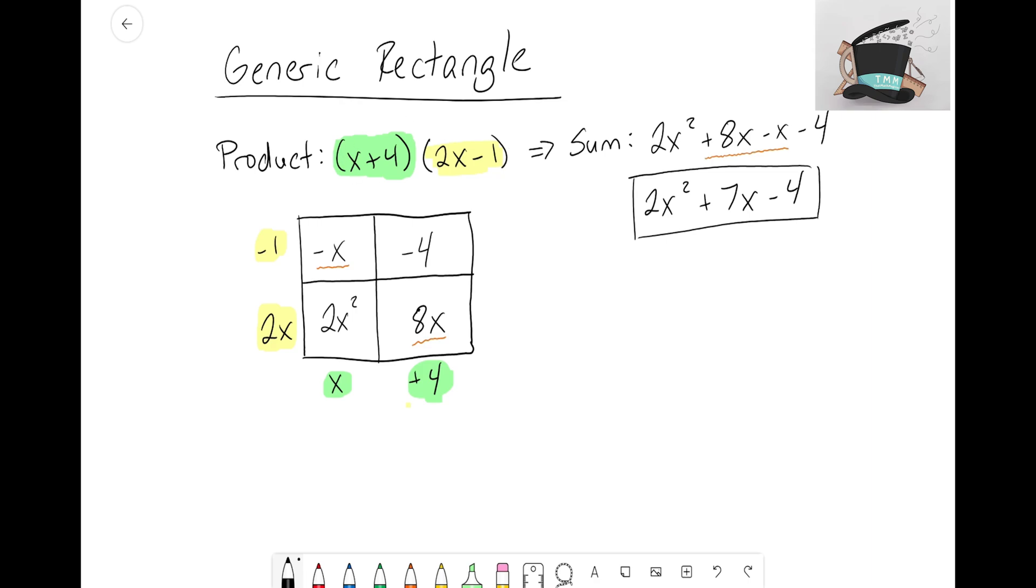Again, we started with the product—the two sides. We filled in our sides on the generic rectangle, multiplied those sides to get the inside, and then wrote those out as our sum. The sum comes from adding up all the terms inside the generic rectangle. All right guys, this is the Math Magician, and I'll see you on the next video.